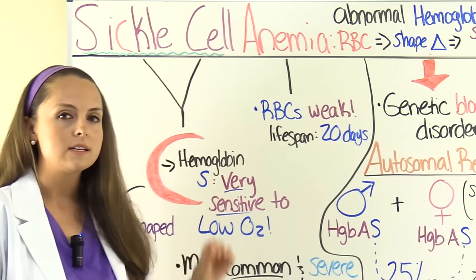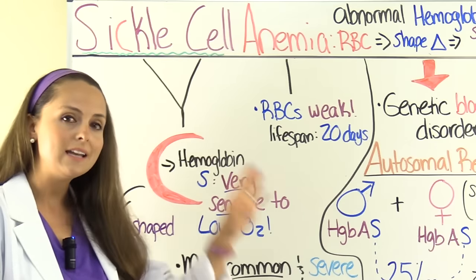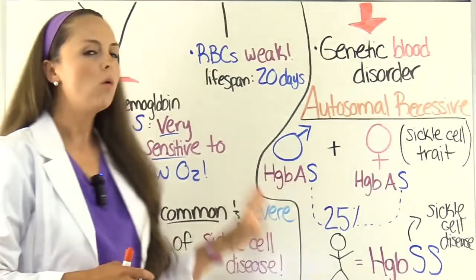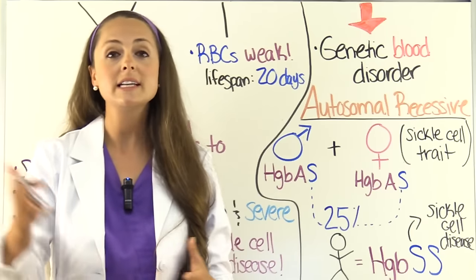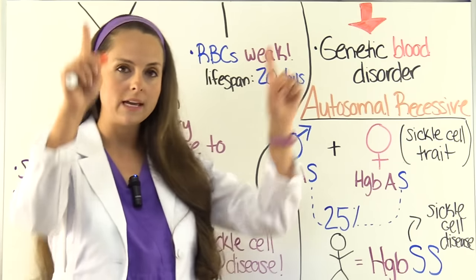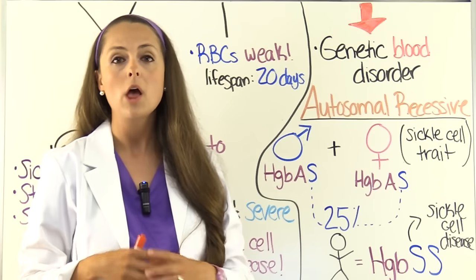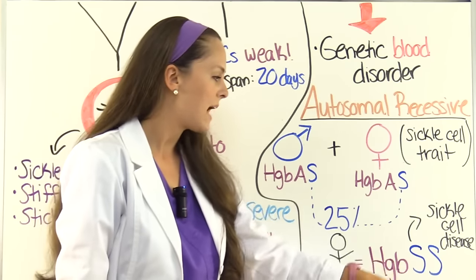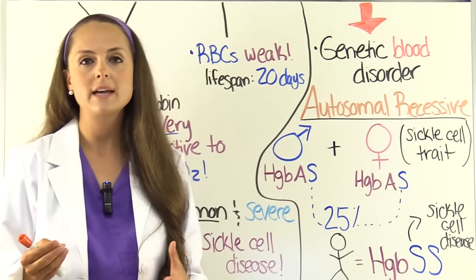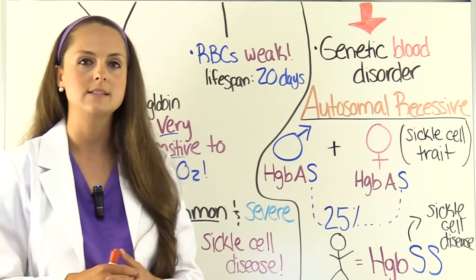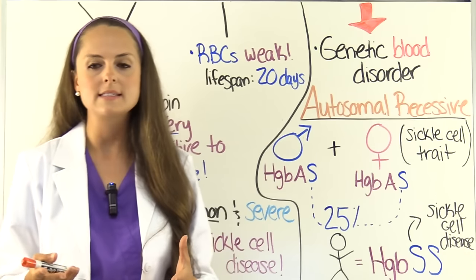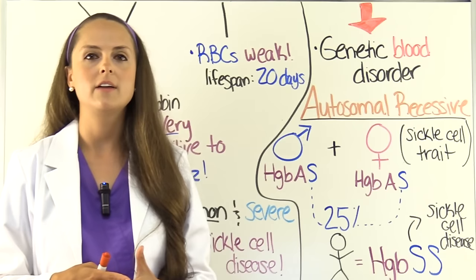There are different types of sickle cell disease, and sickle cell anemia is the most common and most severe form. A person is born with it — they have inherited the abnormal hemoglobin S genes from each parent, making it a homozygous disease. They have hemoglobin SS on their red blood cells. A lot of times you'll see very young patients — six, seven, eight months of age — presenting with signs and symptoms.